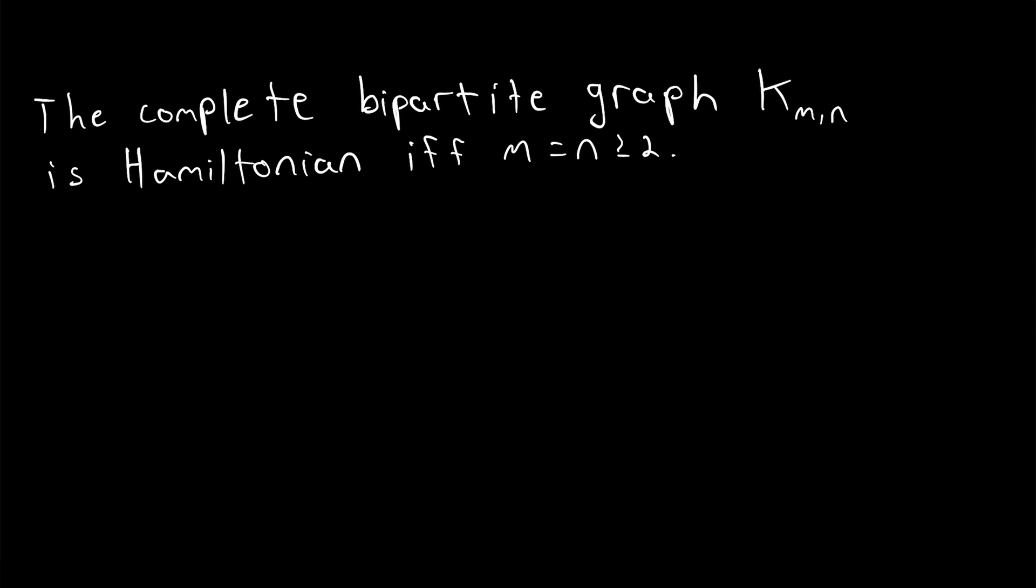Be sure to leave yours down in the comments. Quick recap on terminology: K_m,n is the complete bipartite graph where one partite set has m vertices and the other partite set has n vertices. So this theorem says that